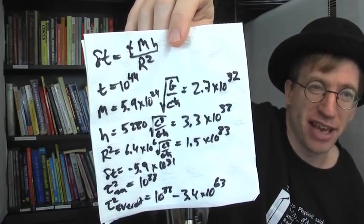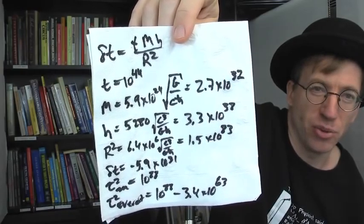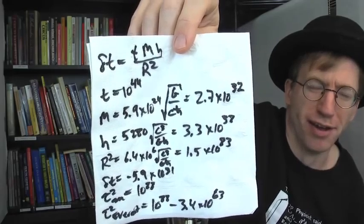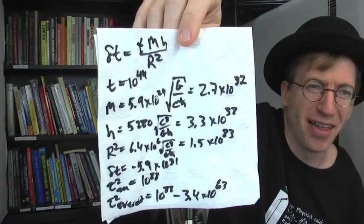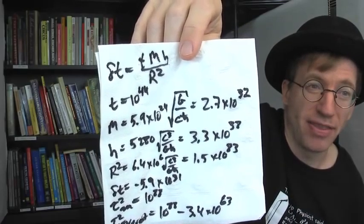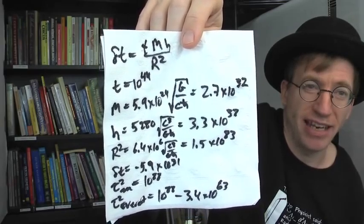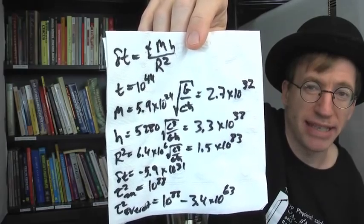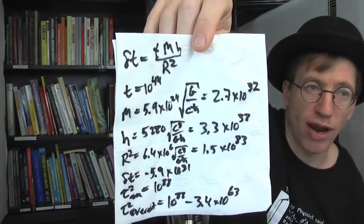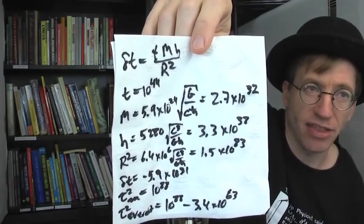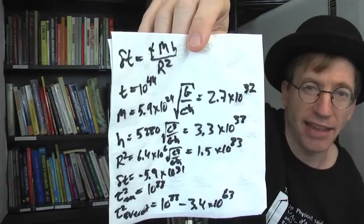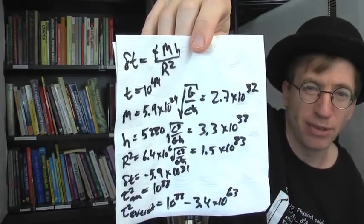The height of Mount Everest is 3.3 times 10 to the 38th — still smaller than five seconds. R-squared comes out to 1.5 times 10 to the 83rd. The delta-t from the height difference is minus 5.8 times 10 to the 31st. If you square the interval at sea level you get 10 to the 88th, and on Everest you get the same 10 to the 88th minus roughly 3.5 times 10 to the 63rd.